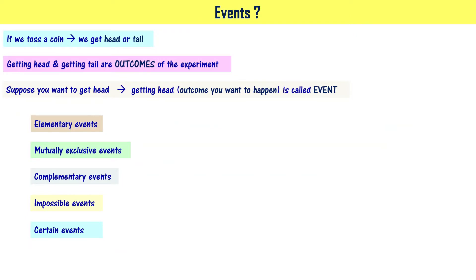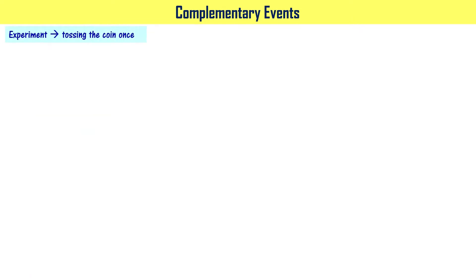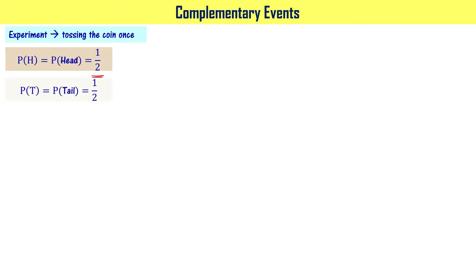Now let us understand complementary events. The experiment is tossing the coin once. Once you toss a coin, you get head or tail. The probability of getting head is 1/2 — that is the theoretical probability. The probability of getting tail is also 1/2. P(H) + P(T) = 1/2 + 1/2 = 1.